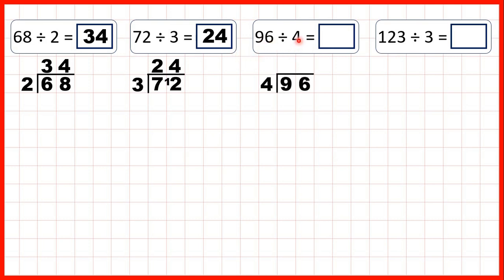Now, 96 divided by 4. 9 isn't in the 4 times table, so we need to think of a number in the 4 times table that's as close to 9 as possible, but not more than 9. Well, 8 is in the 4 times table, and because 2 times 4 is 8, we can write 2 in our answer line. But 2 times 4 is 8, and we need 1 more to get to 9, so we write 1 in front of the next digit. So now we have 16 divided by 4, which is 4, because 4 times 4 is 16, so that gives us 24.